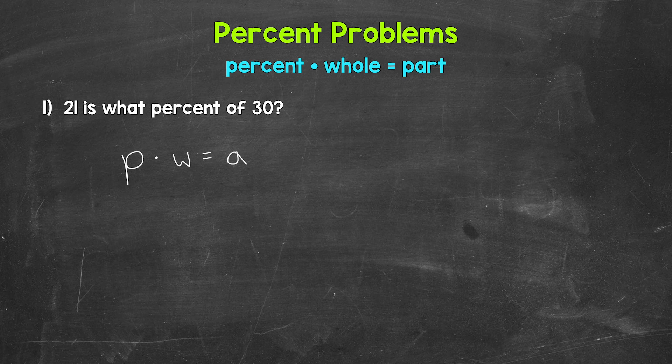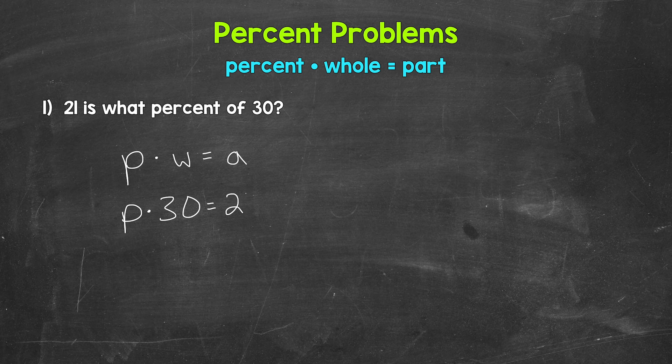For number one: 21 is what percent of 30? So 21 is the part. What percent — the percent is unknown. Of 30 — 30 is the whole amount. With the percent being the unknown, we keep the variable P times the whole, which is 30, equals the part, which is 21.